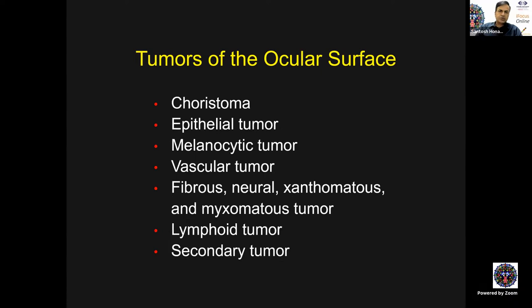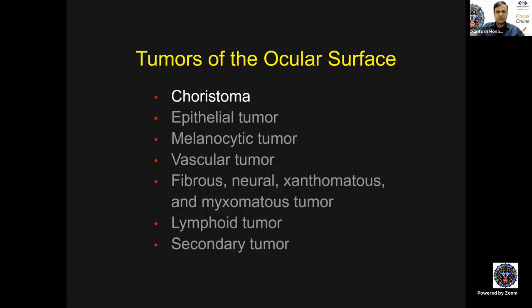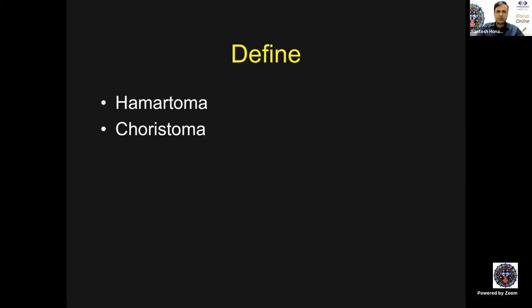These are the tumors of the ocular surface — a laundry list. Choristoma is included because it comes to an ocular oncologist, but it is not really a tumor. Then we have epithelial tumors, melanocytic tumors, a spectrum of vascular tumors, fibrous, neural, xanthomatous, and myxomatous tumors, lymphoid tumors, and secondary tumors.